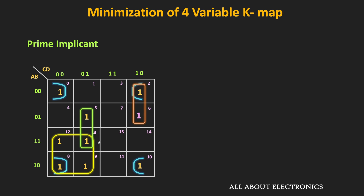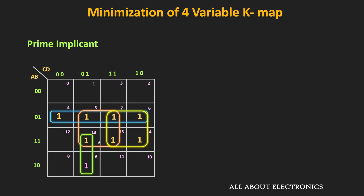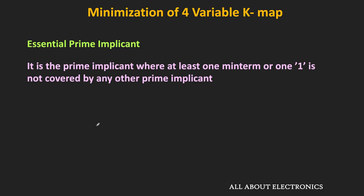During the minimization, every time we do not require all the prime implicants of the function. Sometimes we can cover all the minterms using only a few prime implicants. For example, in this case, the prime implicant in the orange color is the redundant one, and using only these 3 prime implicants we are able to cover all the minterms. So these 3 prime implicants are the essential prime implicants. The essential prime implicant is the prime implicant where at least one minterm is not covered by any other prime implicant.